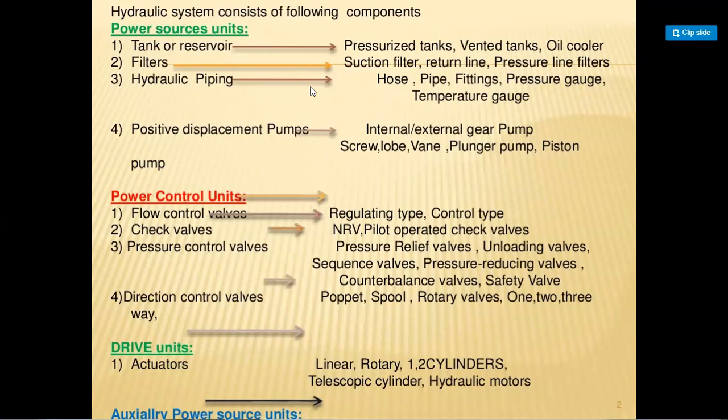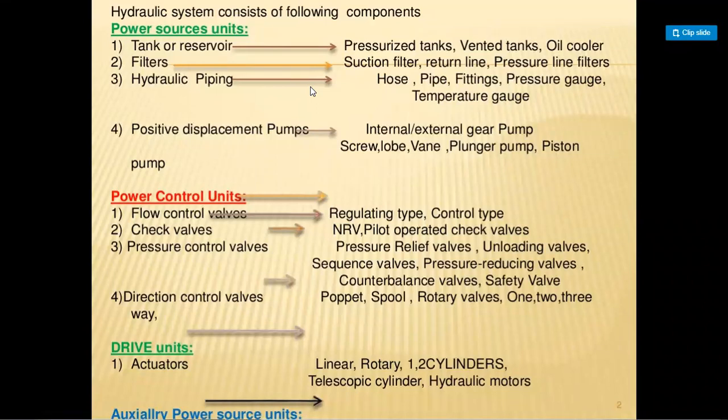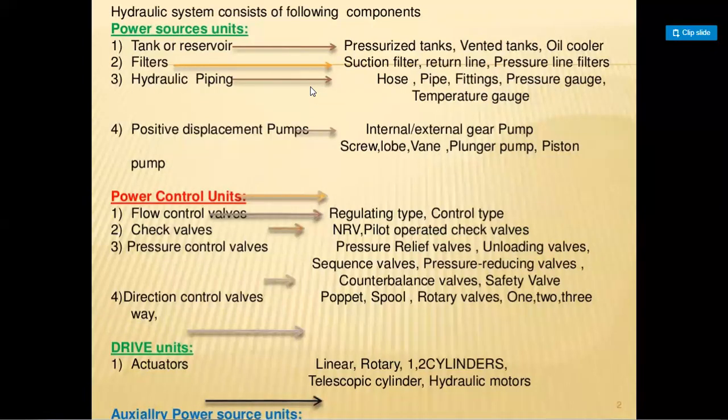The hydraulic piping system uses hose, pipe, fittings, pressure gauge, and temperature gauge. For positive displacement pumps, different pumps are used in hydraulics compared to pneumatics depending on the basic operation. These include internal and external gear pumps, screw and lobe pumps, vane pumps, plunger pumps, and piston pumps.